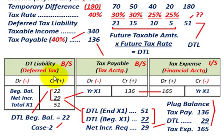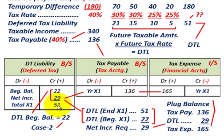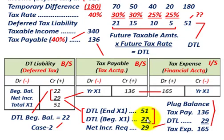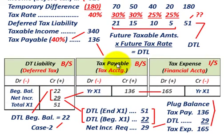That $29,000 is what we have to record in our deferred tax liability. Beginning balance: $22,000 credit. Net increase for the year: $29,000 credit. Total for X1: $51,000. Remember, when you have a beginning balance, look at your ending deferred tax liability, compare it to the beginning of the year, and if you have an increase or decrease, record it appropriately. In this case we had an increase, so we credit our deferred tax liability $29,000. Taxes payable remains the same at $136,000, which we credit.